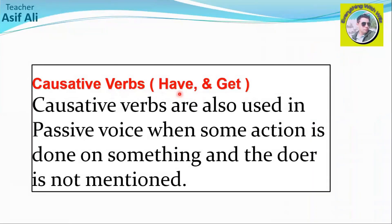The causative verbs we focus on here are 'have' and 'get.' One thing to clarify: in the passive voice we do not use 'make' — we use 'have' and 'get' mostly. So in passive causative we use only two causative verbs: have and get. While in the active causative we use three — make, get, and have. Passive causative verbs are used when some action is done on something and the doer is not mentioned.